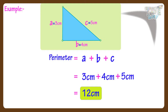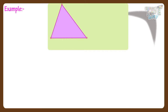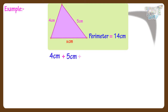Now let's take another example. Here we have a triangle. Lengths of two sides of the triangle are mentioned, and the perimeter of this triangle is also mentioned. Can you calculate the length of its third side? Let's find it out. Let the third side be x centimeters. We can write it in the form of a mathematical equation: 4 centimeters plus 5 centimeters plus x equals 14 centimeters.